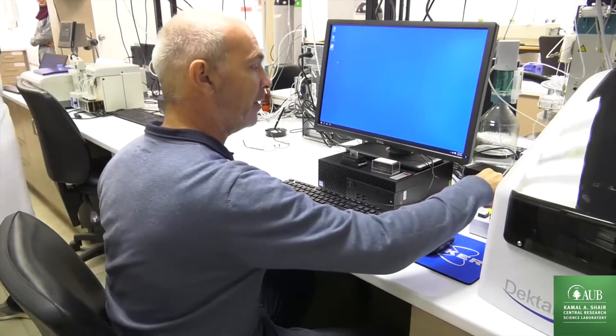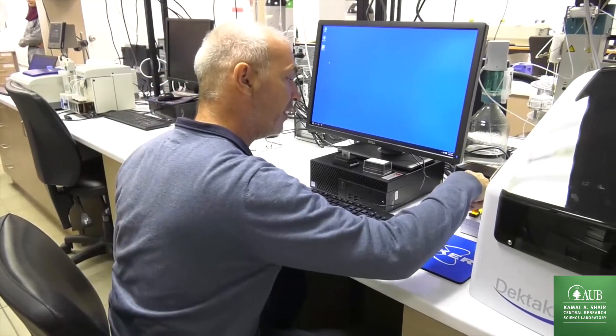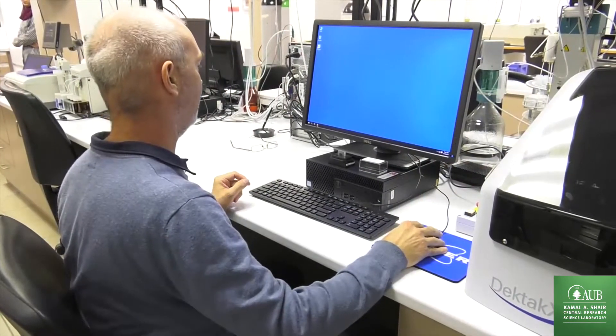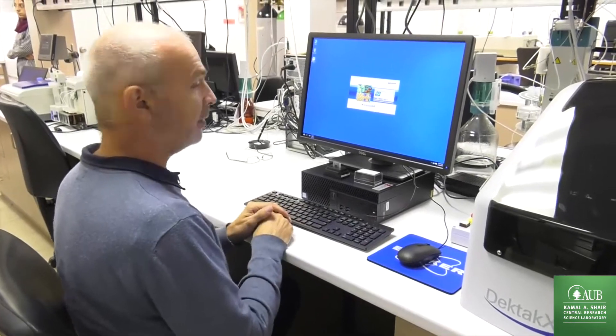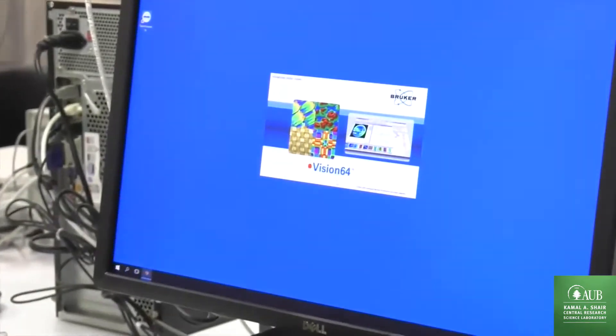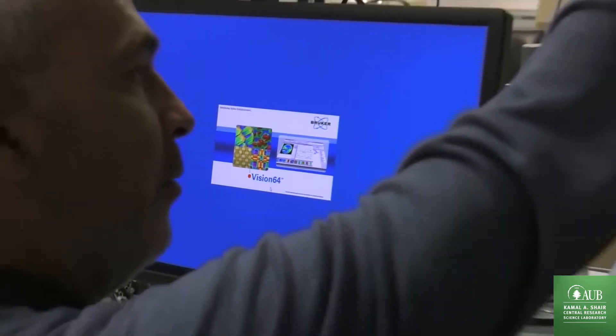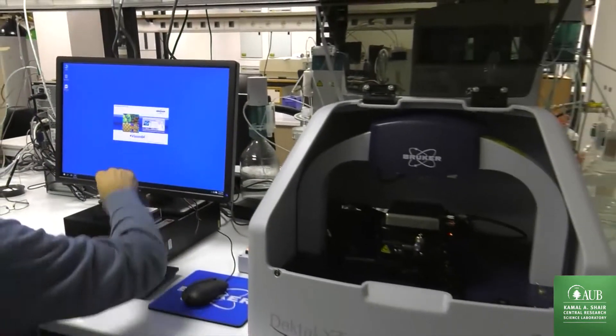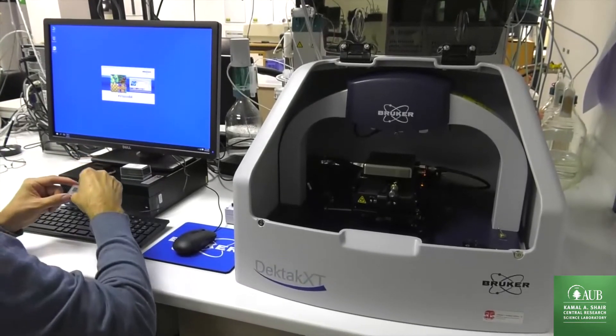We start by turning on the electricity of the system here and we start the Vision64 software. In the meantime, we can open the enclosure and place our sample.